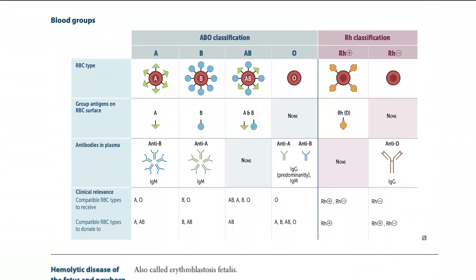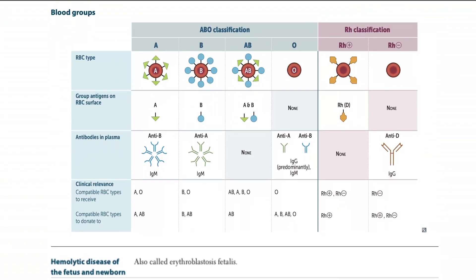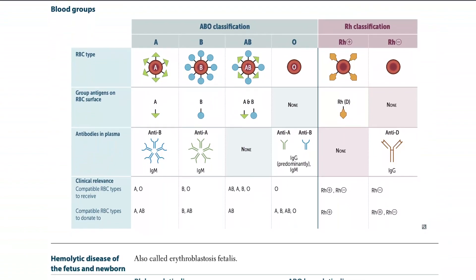Moving on with the blood grouping, very important clinically. And very easy. So let's talk about this blood grouping. What do we have? We have the ABO classification and RH classifications.